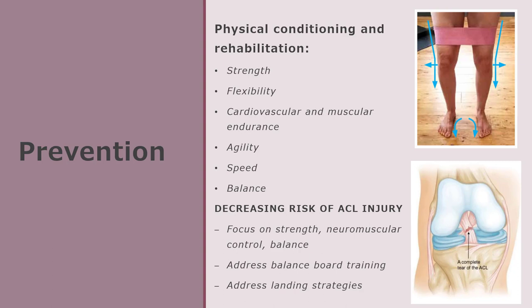If possible, we would like to avoid abnormal muscle action through the use of flexibility. In an effort to prevent injury, extensibility of the hamstrings, erector spinae, groin muscles, quadriceps, and gastrocnemius are all important. To decrease the risk of ACL injury, focus on strength, neuromuscular control, and balance. There are a series of different programs that address balance board training, landing strategies, plyometric training, and single leg performance. These can all be implemented in a rehabilitation or a preventative training program.